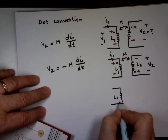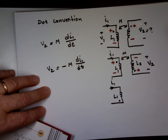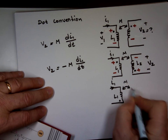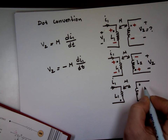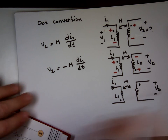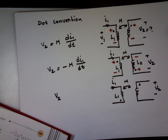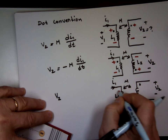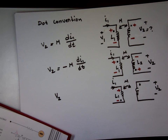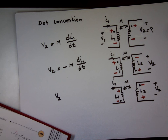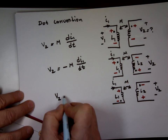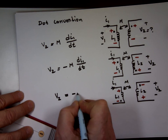What if the current doesn't enter the dot? This is L1 with the dot here, and I_1 is going this way. There's a mutual inductance here, and the dot is at the bottom for L2. I define V2 that way. I_1 travels this way, marking the inductor plus to minus. The dot here is negative. The effect on the other coil: minus at the dot, plus at the other end. So V2 equals negative M·dI1/dt.